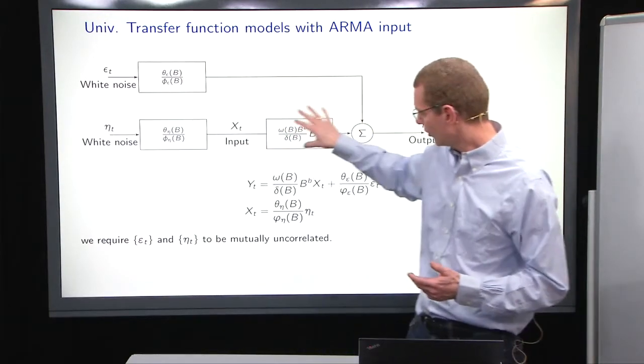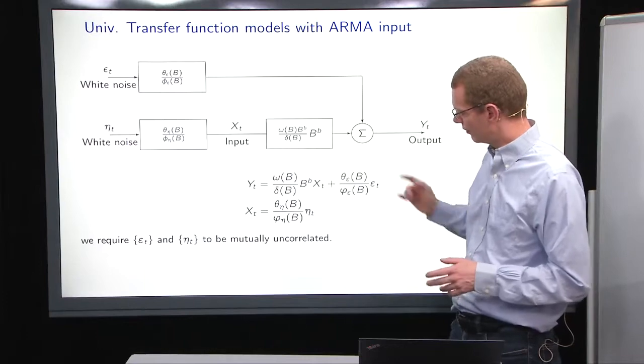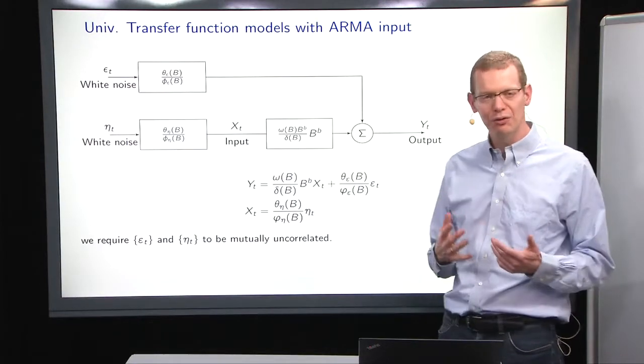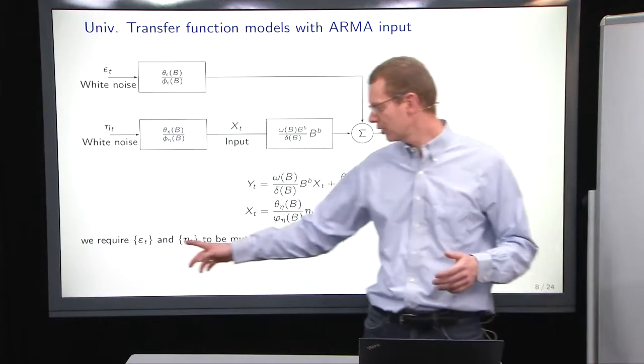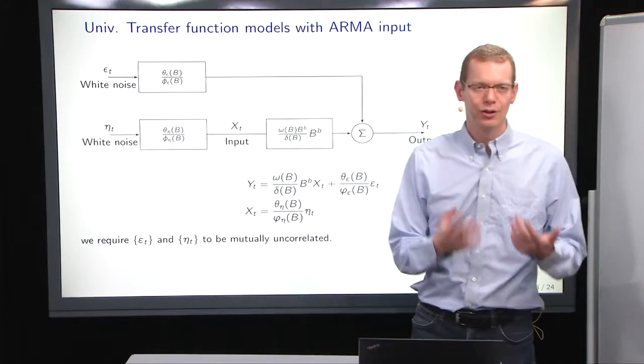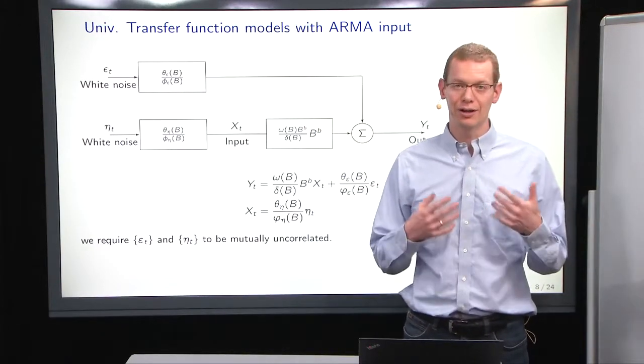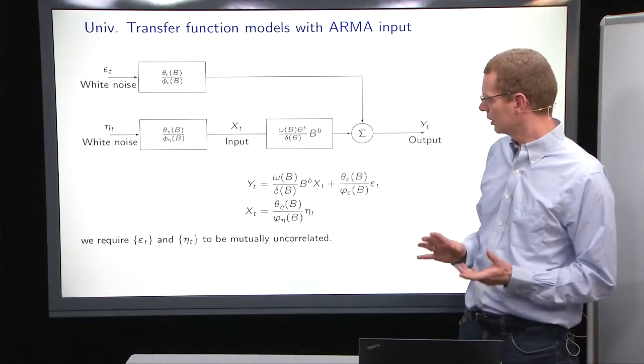Now this model structure, we write it out as an equation on the following form, and what we require is that the epsilon and the eta noise inputs are independent, uncorrelated, white noise signals.